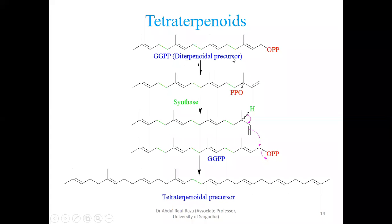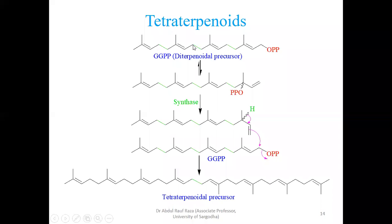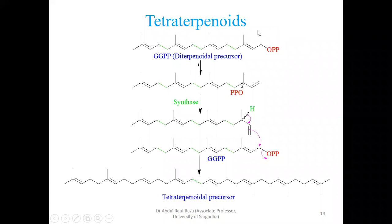This precursor is commonly called the diterpenoidal precursor, but in literature it is called GGPP — geranylgeranyl pyrophosphate — meaning two geranyl units are combined. This carbon is electron-deficient (has OPP), and the other carbon is electron-rich, so electron-rich and electron-deficient combine to form the 20-carbon unit. Up till sesterterpenoids, head-to-tail fashion applies; but for tri- and tetraterpenoids, it undergoes tail-to-tail combination.